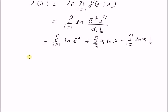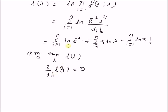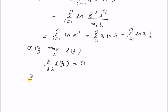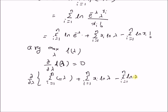To find the maximum likelihood estimator of lambda, we set up the problem as follows: we want to find the value of lambda that maximizes the log-likelihood function L of lambda. This can be determined by equating its derivative with respect to lambda to 0. That is, the derivative of the sum of those three terms should be equal to 0.